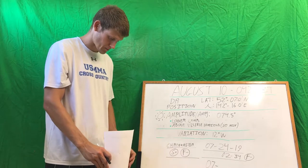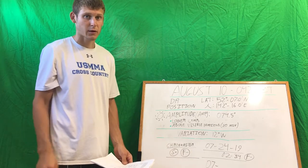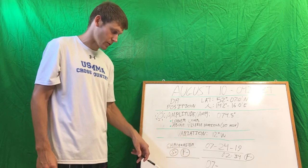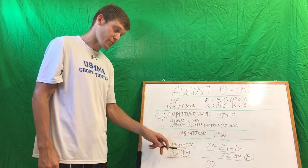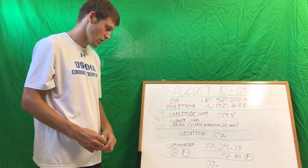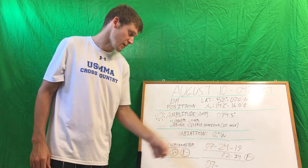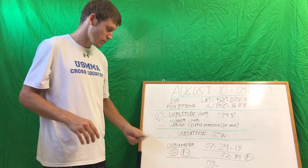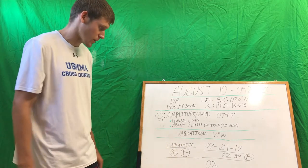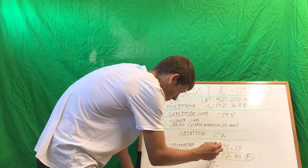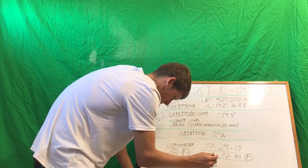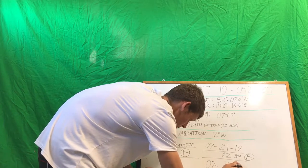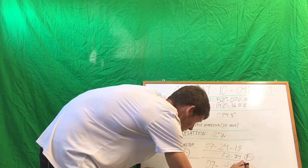The first thing you'd want to start with is solving the time on the chronometer. If the chronometer is slow, you add the time difference; if it's fast, you subtract it. Our chronometer read 07:24:19, and we were told it was fast by 2 minutes and 34 seconds. So you subtract: 07 hours 24 minutes 19 seconds minus 2 minutes 34 seconds gives you 07 hours 21 minutes 45 seconds.